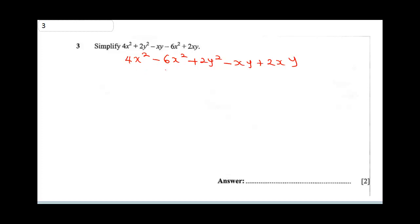From here, 4x² - 6x² will give us -2x² plus 2y² - xy + 2xy will give us +xy. Let's bring our 2y² first: 2y² - 2x² + xy.